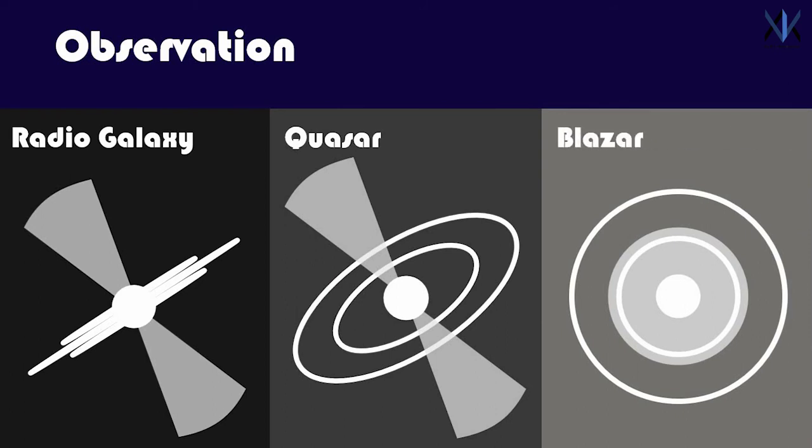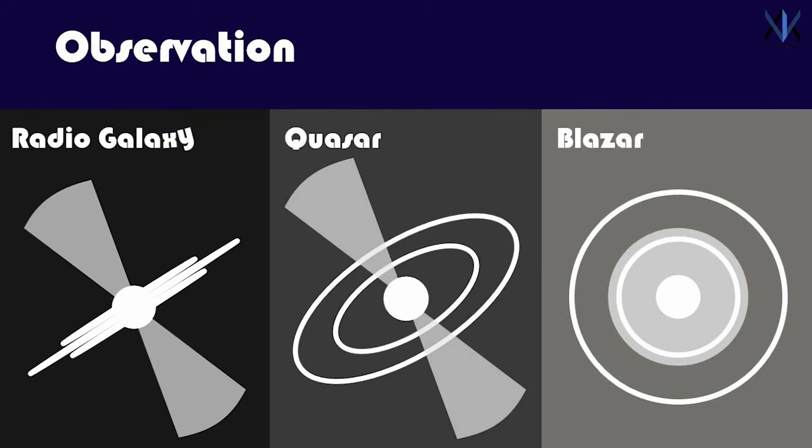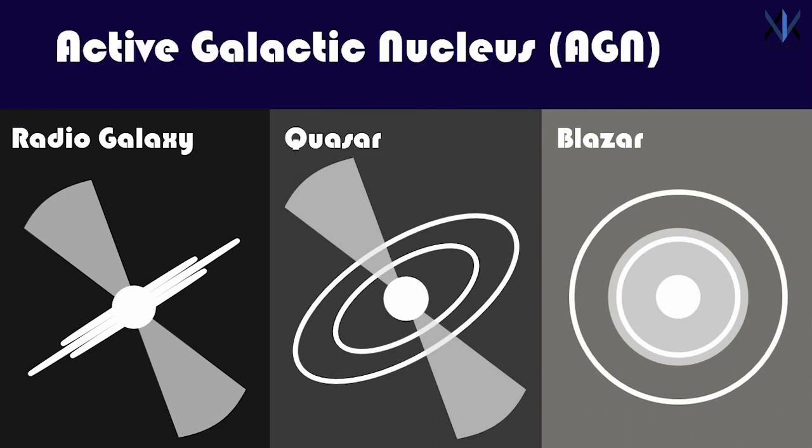So, when a supermassive black hole feeds and blasts energy into the universe, it can be called a quasar, blazar, or a radio galaxy based on our direction of view. So basically, all three are different names given to a supermassive accreting black hole, which is also known as active galactic nucleus.